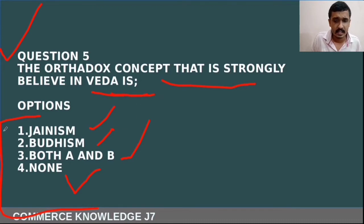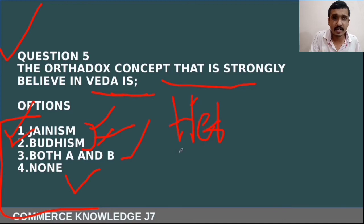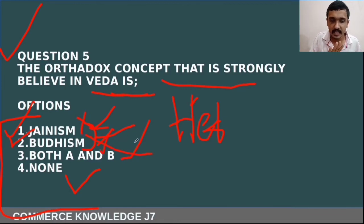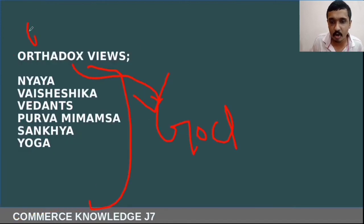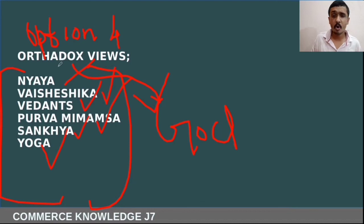Jainism and Buddhism are heterodox views — they do not believe in the Veda or God. So Jainism is not orthodox, Buddhism is not orthodox. The right answer is option four — none of these. Some orthodox views include Nyaya philosophy, Vaisheshika philosophy, Vedanta, Purva Mimamsa, Sankhya, and Yoga — these strongly believe in the Veda.